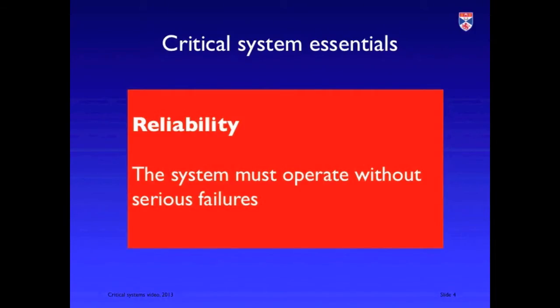Reliability is the ability of the system to operate without serious failures. This includes things like system crashes, but it also means that it should be delivering its services as expected by users of the system.